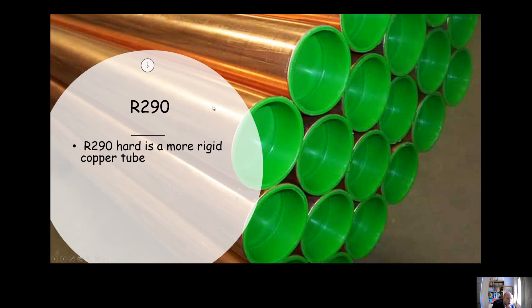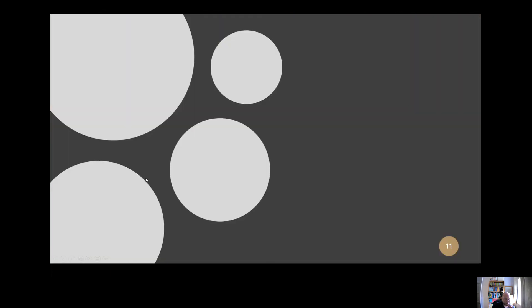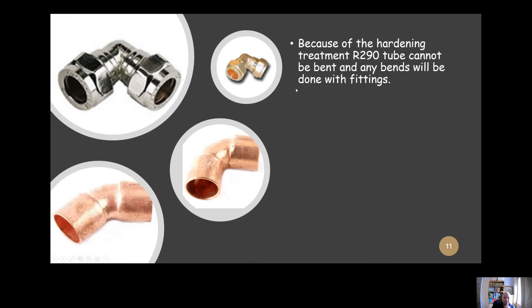R290 is known as hard copper pipe. This is actually going to be treated to make it hard. The walls are generally going to be a little bit thinner, but the external bore is going to be the same as R250. The common pipe sizes are again going to be 15mm, 22mm, 28mm. You can't bend R290, not using the machine. Any changes of direction would have to be done with fittings.